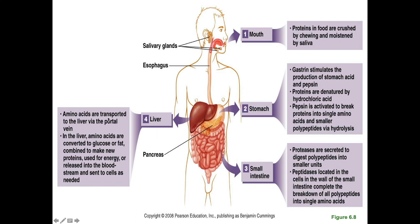These amino acids, once in your bloodstream, travel to the liver via the portal vein. In the liver the amino acids are then converted into glucose or fat, combined to make new proteins, used directly for energy, or sometimes released into the bloodstream and sent to cells so that they can make proteins.